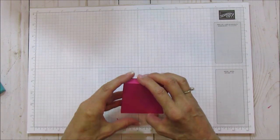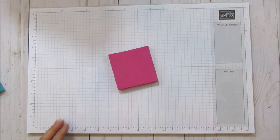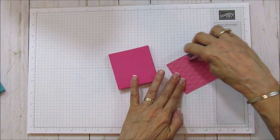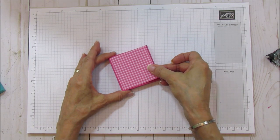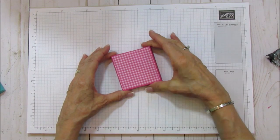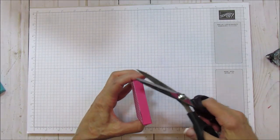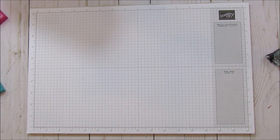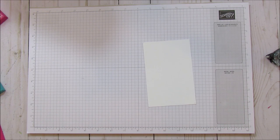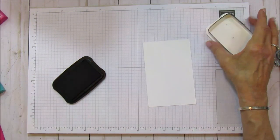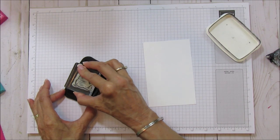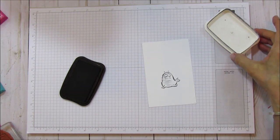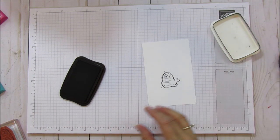All right, so there it is and now let's go ahead and mat it. So I'm going to get my little gingham piece here and then we'll get stamping. Love this gingham. All right, so we're going to use our whisper white and we're going to stamp with memento black. We're going to stamp our little walrus and I put them up there because we are going to use the framelit to cut him out.